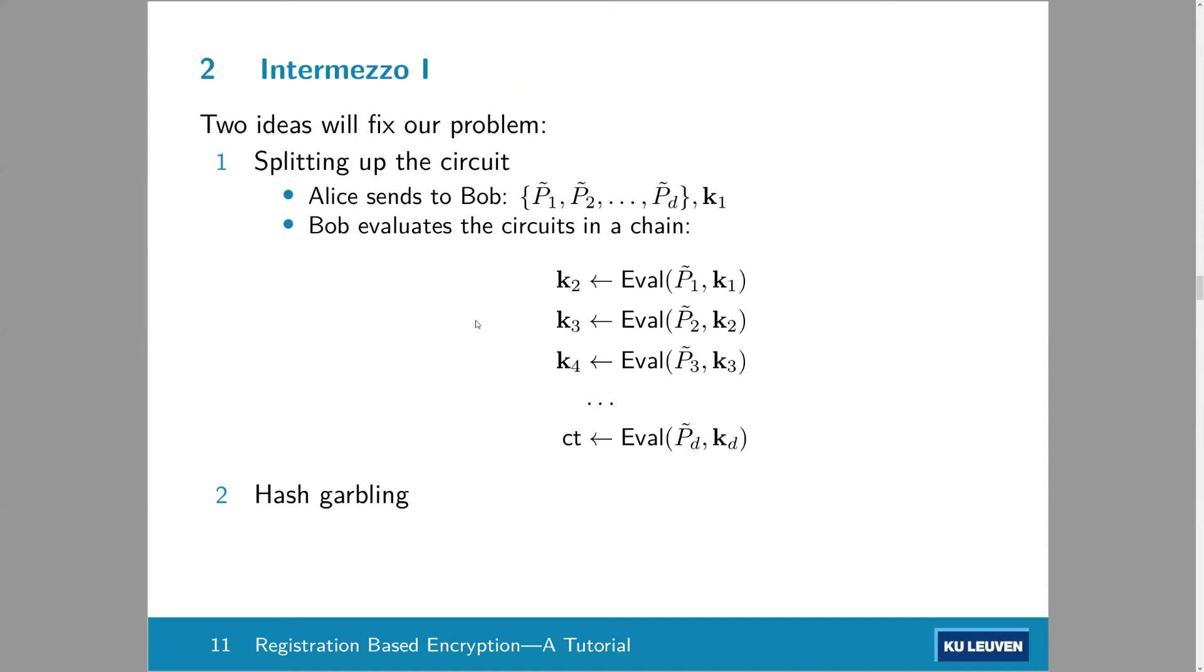So how to fix that problem? So I need to introduce two ideas. The first is splitting the circuit. Basically, the idea is instead of sending one circuit, Alice will send a bunch of them and then some input labels. And then when Bob evaluates the circuit, he will evaluate them in a chain. So, for example, he takes the first garbled circuit and because he also knows the first set of labels, he can evaluate the first one. And that's going to give you the second set of labels. And he can continue with this. And finally, he receives the ciphertext. So this is not exactly how it works, but that's just an idea that I want to introduce.